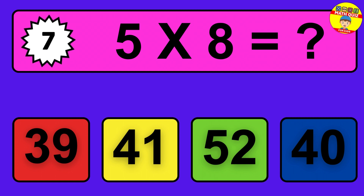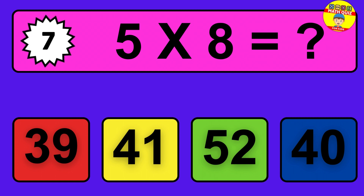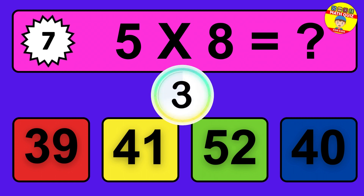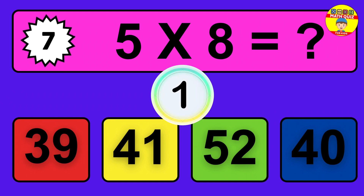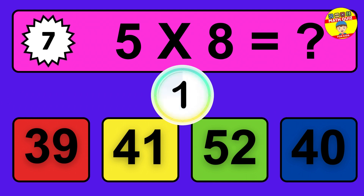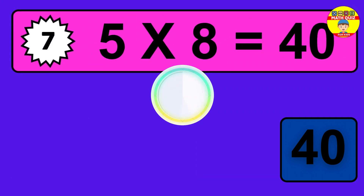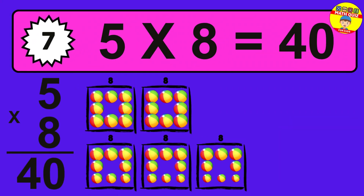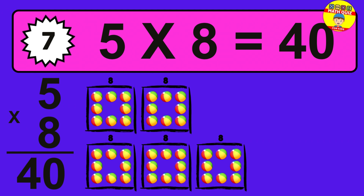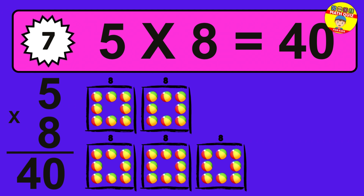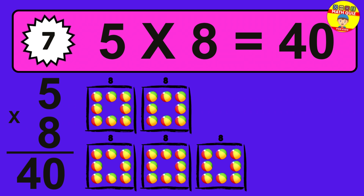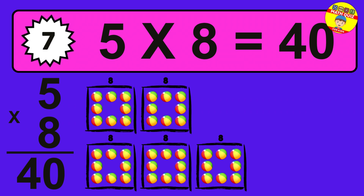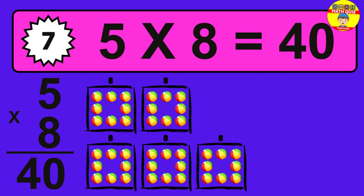Question 7. 5 times 8 equals what? The answer is 5 times 8 is 40. To calculate, we have 5 groups with 8 balls each one. So how many balls do we have? 40 balls.